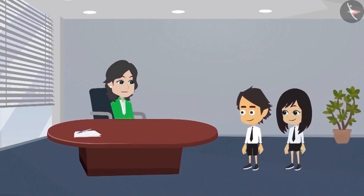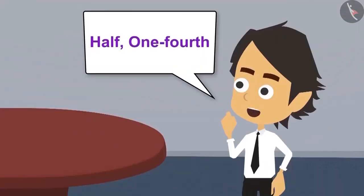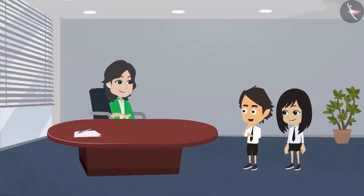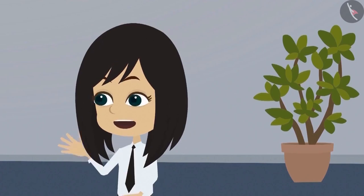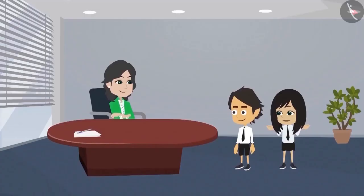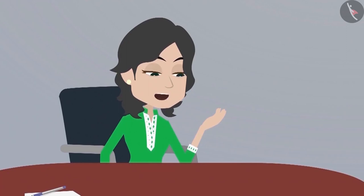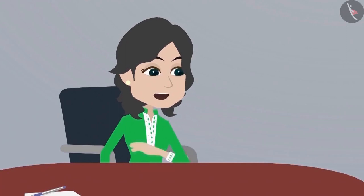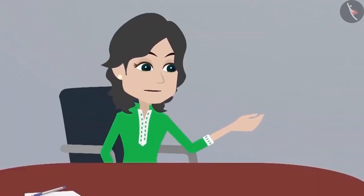Hello, ma'am. Hello, Neha and Ayushman. Tell me, what do you want to learn today? Madam, we want to know whether half and quarter are also numbers. Can you explain? Yes, Ayushman, these two are numbers. But half and quarter are written in words. If these are numbers, then why don't we write them in numbers? They are also written in numbers. Writing in digits also makes it easier to add and subtract them. How are they written in numbers, madam? I will show you how.